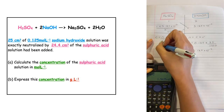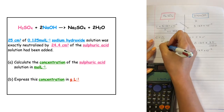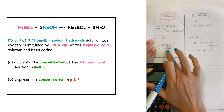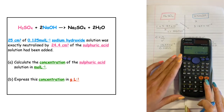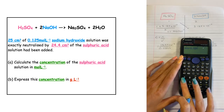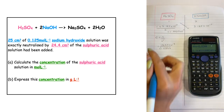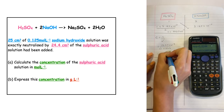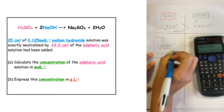We substitute that number of moles in: 1.5625 times 10 to the minus 3, and divide it by the volume we already have, 0.0244 liters. That gives us the concentration of sulfuric acid as 0.064 moles per liter.